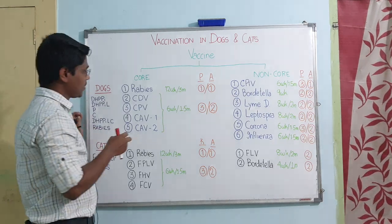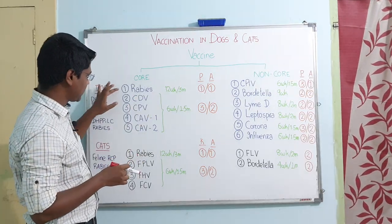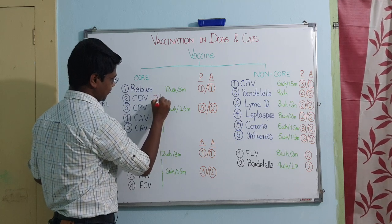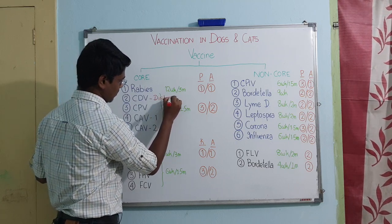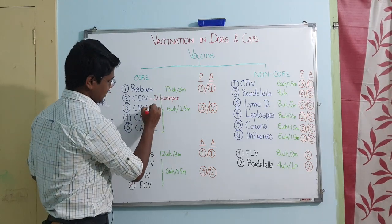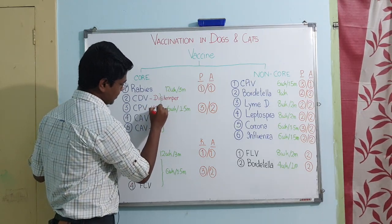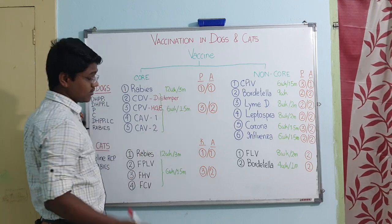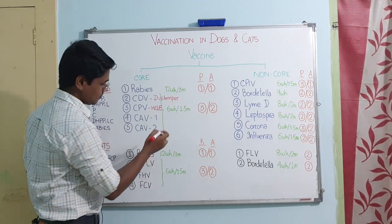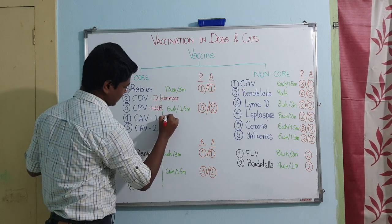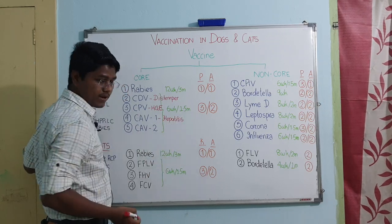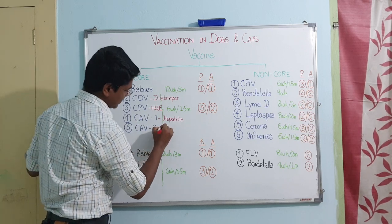Which vaccines come under core vaccines? Most importantly, the rabies vaccine. Next, canine distemper virus vaccine, which causes distemper disease. Then the canine parvovirus, which causes a condition known as hemorrhagic gastroenteritis — the animal will have bloody stool and vomiting. Next is canine adenovirus type 1, which causes hepatitis, and canine adenovirus type 2, which causes kennel cough.